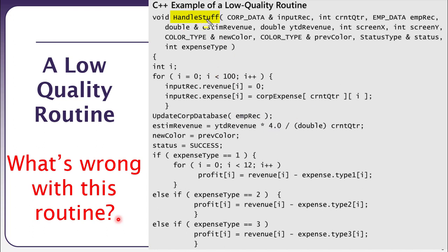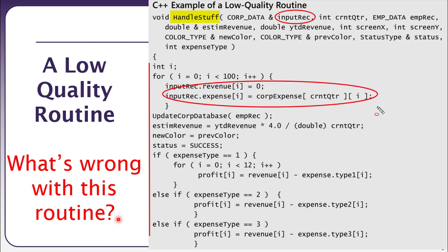If the name does not tell anything, I also cannot see any comment or documentation that explains the purpose and intention of this function. In addition, the layout of the routine is completely haphazard and the indentation of the code is unclear. Looking at the parameters, there is a parameter called 'input record' which is a reference variable, and inside the body of the method its value is being changed — a practice that is discouraged.